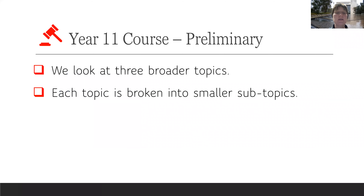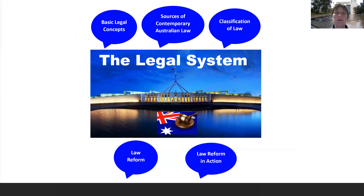The Year 11 course has three broad topics, and each topic is broken into smaller subtopics. The first topic is the legal system, where we look at the overall Australian legal system and we look at law reform.